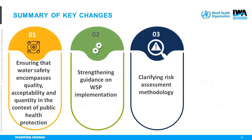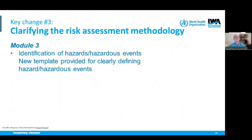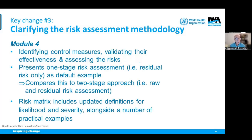The third key change is clarification of certain aspects of the risk assessment methodology. Module 3 now deals exclusively with the identification of hazards and hazardous events, and introduces a template to help WSP teams better define their hazardous events. Module 4 now deals exclusively with the risk assessment, where a one-stage risk assessment is presented as the default example but with guidance on the benefits and limitations relative to a two-stage risk assessment. The definitions in the risk matrix have been strengthened, alongside additional examples to help WSP teams define the risk matrix in their own context.